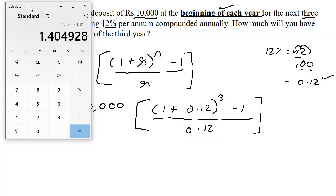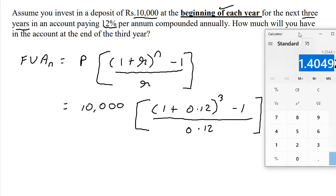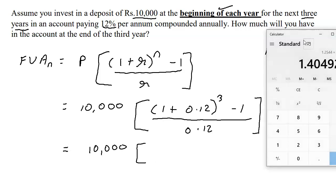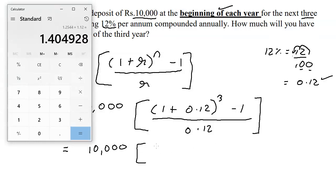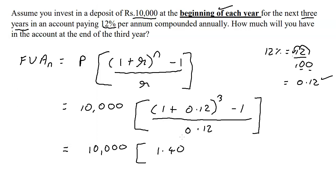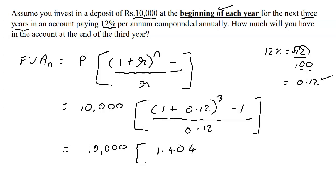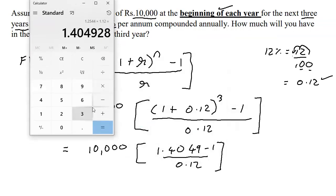So we have 1.4049. If you really want to take the long method, you can say it is equal to 10,000 open bracket 1.4049 minus 1 upon 0.12.